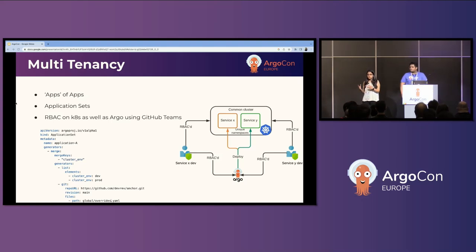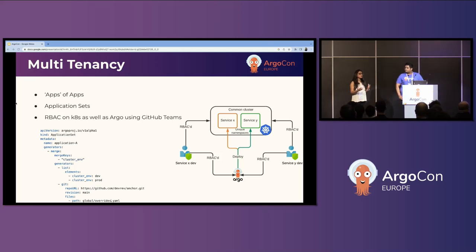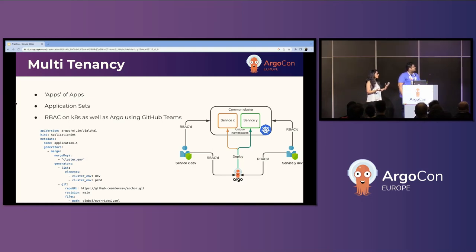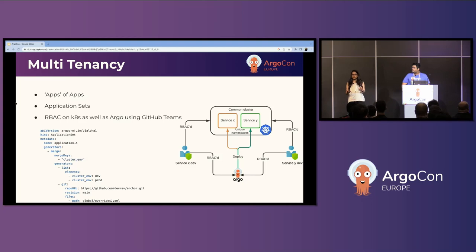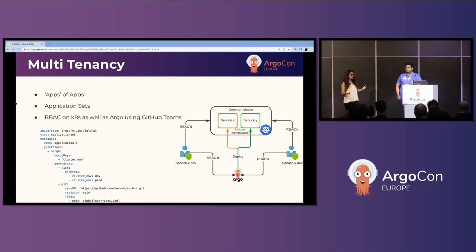Along with Apps of Apps, Argo also has ApplicationSet functionality. With ApplicationSets, it gives you a number of generators you can use to create a template for deploying one microservice to different environments. For example, in the snippet shown here, it uses three different generators — merge, list, and git — and when rendered, produces two different application manifests for dev and prod, taking care of all the configuration needed for the target clusters from the YAML specified. This is all done with a single set of YAML, so if tomorrow I have to add more environments like QA, staging, or pre-prod, I just add a few more elements and update the config file.